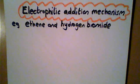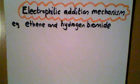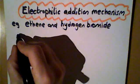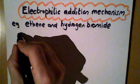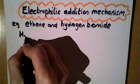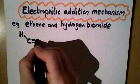We're going to look at the mechanism involving a reactive species called an electrophile. We're going to look at the typical homologous series — the alkenes — and specifically the simplest alkene, which is ethene.